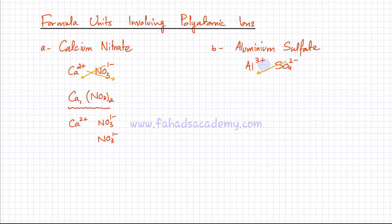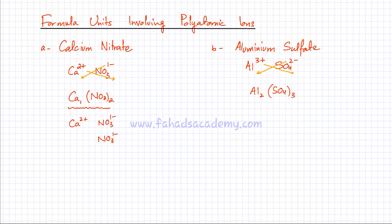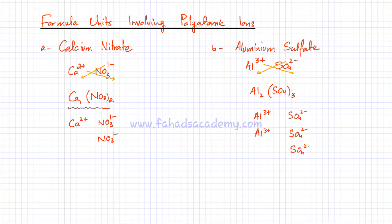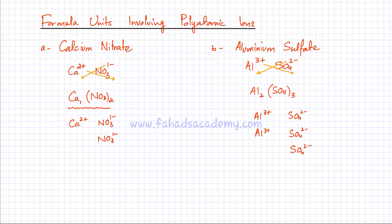Bring the 2 over here and the 3 goes there. The formula for aluminum sulfate is Al2(SO4)3 — there are 2 aluminiums and 3 sulfate ions, with a bracket around sulfate to show it's 3 complete sulfate ions. Aluminum loses 3 electrons, so 2 aluminiums lose 6 electrons total. Sulfate gains 2 electrons, so 3 sulfates gain 6 electrons total. The ratio of aluminum to sulfate is 2:3.